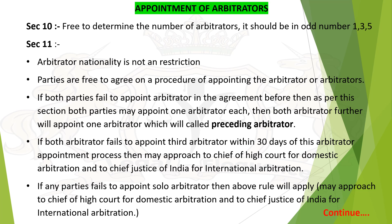Settlement on the conciliation proceedings: as per Section 74, it has the same status and effect as an arbitral award — it shall be final and binding on the parties, and does not require future authentication if signed by the conciliator. Termination of conciliation proceedings — grounds: by signing of settlement agreement by the parties; written declaration of the conciliator after consultation with the parties; written declaration of the parties addressed to the conciliator; or by written declaration of a party to the other party and the conciliator. Resort to arbitral or judicial proceedings: this section provides that during conciliation, parties should not initiate any arbitral or judicial proceedings until necessary to preserve their rights.